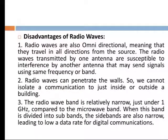Disadvantages of radio waves: Because radio waves are omnidirectional and travel in all directions from the source, radio waves transmitted by one antenna are susceptible to interference from another antenna that may be sending signals using the same frequency or band. Radio waves can penetrate walls, so we cannot isolate communication to just inside or outside a building. The radio wave band is relatively narrow — just under 1 GHz compared to the microwave band — so when divided into sub-bands, those sub-bands are also narrow, leading to low data rates for digital communication.